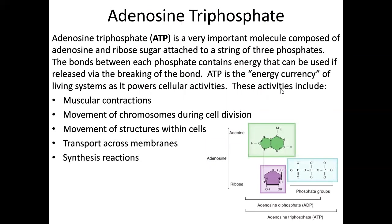One last organic compound to talk about, kind of as a hybrid, is ATP — short for adenosine triphosphate. It includes adenine, one of those nitrogenous bases we just discussed, ribose — the same five-carbon sugar that's in RNA — and instead of one phosphate, it has three phosphates at the tail end. That's why we call it ATP — triphosphate.